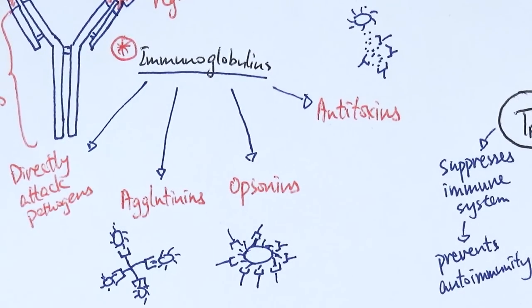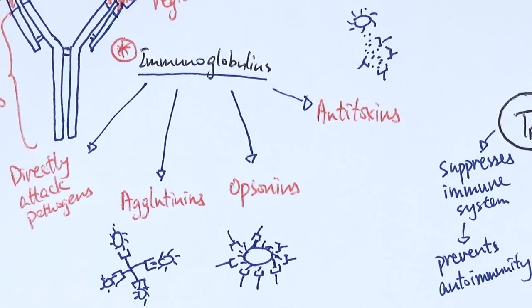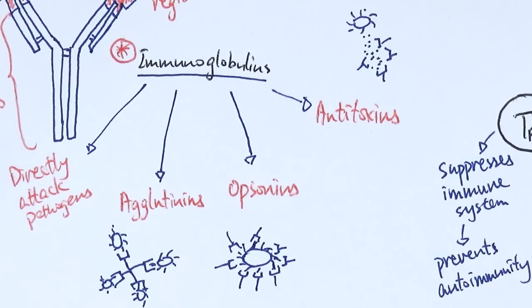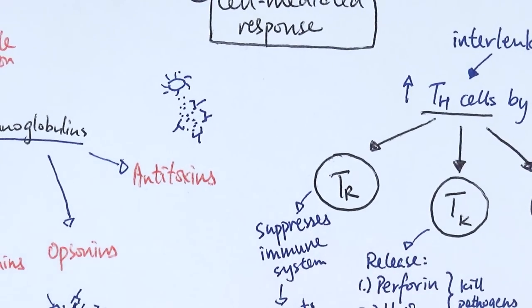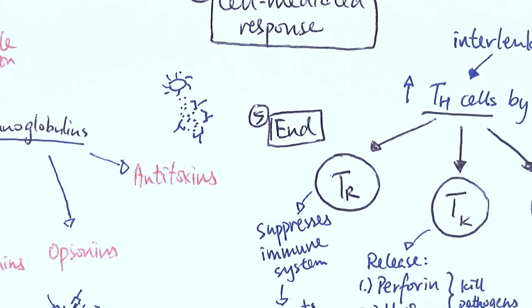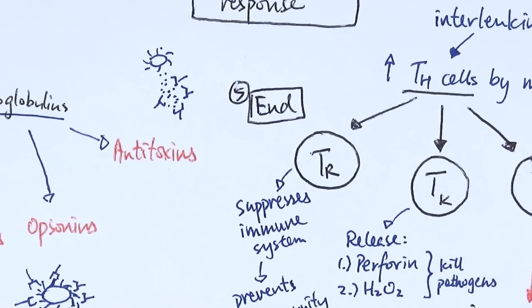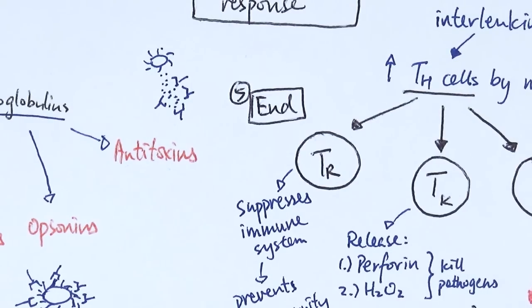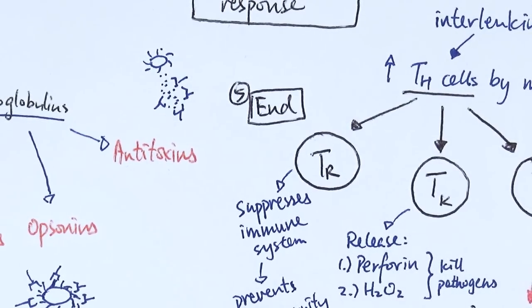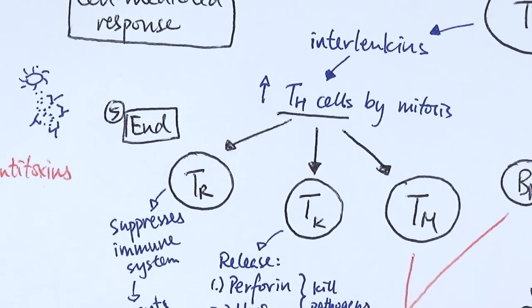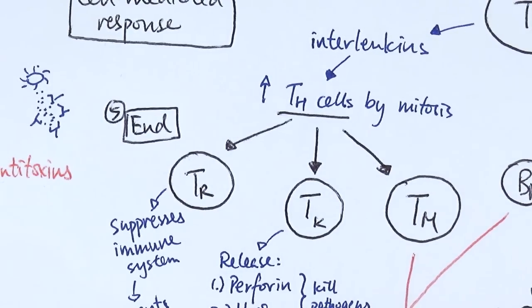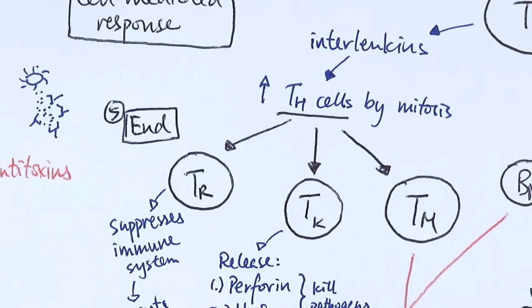Because B plasma cells rapidly produce large quantities of these specific antibodies — performing all these different functions — the pathogen is quickly wiped out. Then T regulatory cells kick in and kill all of the other white blood cells except for the T memory cells and B memory cells, which are kept for next time. This suppresses the immune system so it doesn't go into overdrive and start attacking the body's own cells.